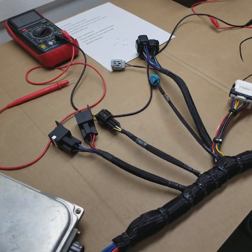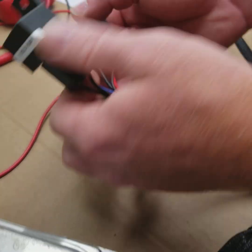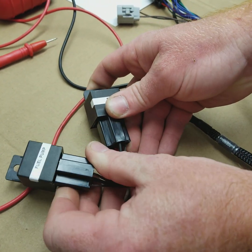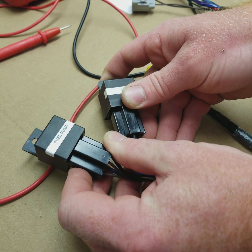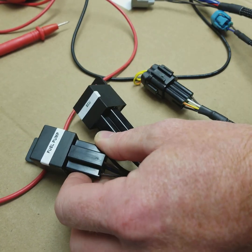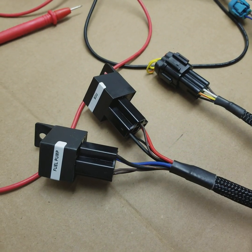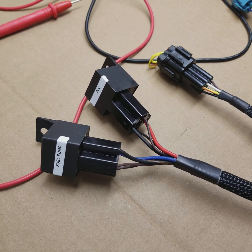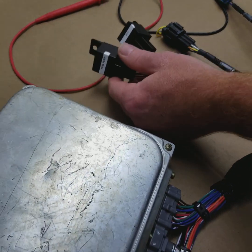Now what we really want to go over is the operation of these two relays. Our JZ harnesses all have a fuel pump relay on them because a lot of the JZ cars have fuel pump controllers. And everyone swapping these into their cars usually doesn't have the controller. So that's the reason this is on here.